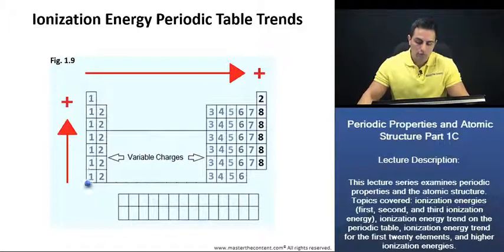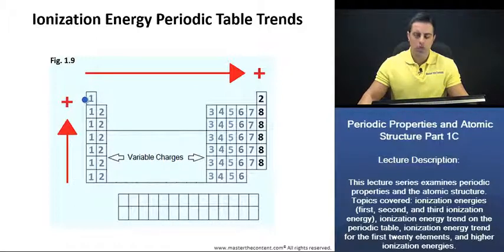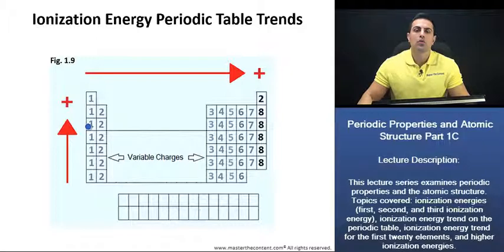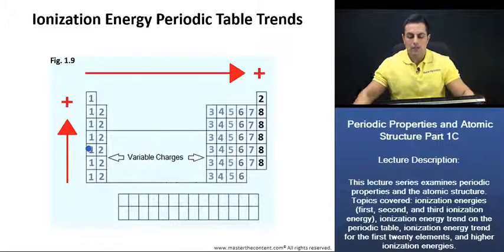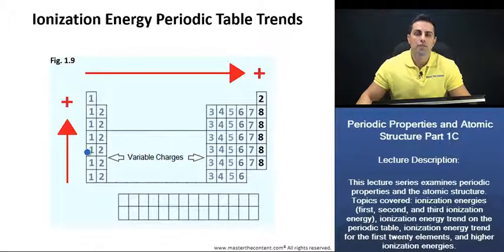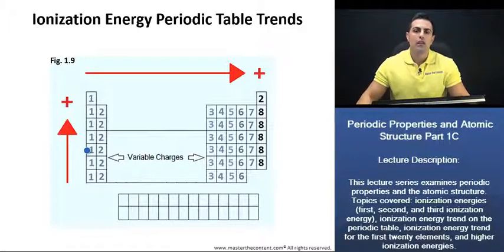How about as we move up a group? If we take a look at group one, as we move down the row, those valence electrons are going to be on subsequent quantum levels. And if they're going to be on subsequent quantum levels, those valence electrons are going to be farther from the nucleus. And if they're farther from the nucleus, they're not going to have an attraction for the nucleus that is as strong.